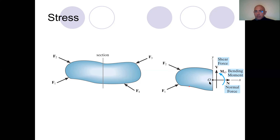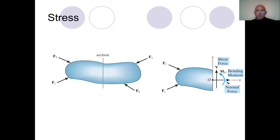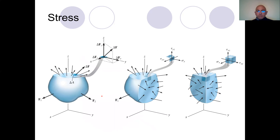When we cut the structure in 3D, we have an arbitrary resultant force and a moment acting on that surface. In three-dimensional structures, the structure must be in static equilibrium wherever we cut — it doesn't matter where we cut.